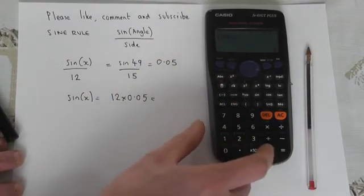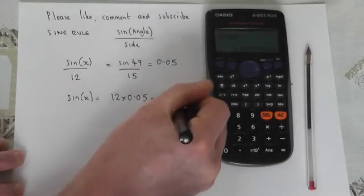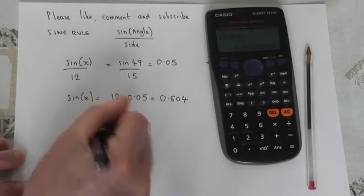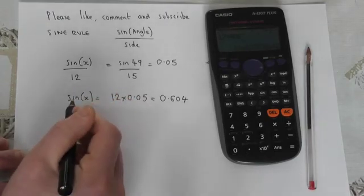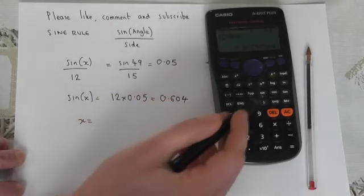So 12 times the answer we have which gives us 0.604. Then to find the angle to get rid of the sine we do the inverse sine where we press shift sine.